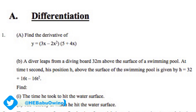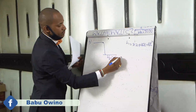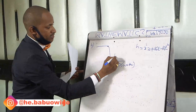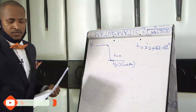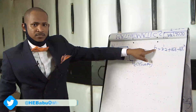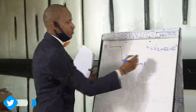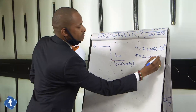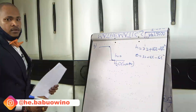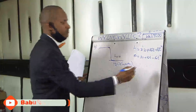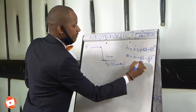So when the diver dives and hits the water surface, at the water surface the height h is 0. Therefore, if they want the time taken for the diver to hit the water surface, we only replace the height with 0. So here: 0 equals 32 plus 16t minus 16t squared. With this equation we can simplify further because we have a common factor of 16, so we divide by 16. 0 equals 2 plus t minus t squared.